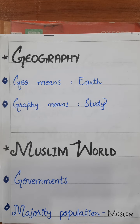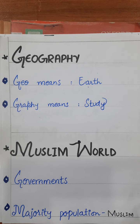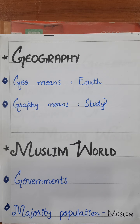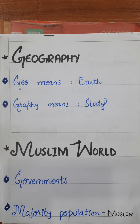Then we have the Muslim world. When we talk about the Muslim world, which thing comes in your mind? The word Muslim world means Muslim community, or where Muslims are in majority. According to your book, the definition of the Muslim world is: those countries whose governments have declared that they are Islamic countries and where the majority of the population is Muslim.